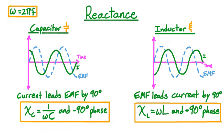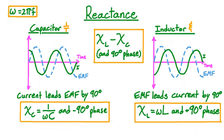To account for this phase shift between the inductor and capacitor driven by the same electromotive force, to combine the reactances we subtract the capacitive reactance from the inductive reactance. This total reactance will still carry with it a 90-degree phase shift of the current relative to the EMF. However, which direction this phase shift occurs will be determined by the sign of the difference between the inductive and capacitive reactances. If the inductive reactance is larger, the difference will be positive and the phase shift will be forward. If the capacitive reactance is larger, the difference will be negative and the phase shift will be backward. So the larger of the two reactances determines the phase shift for the current.